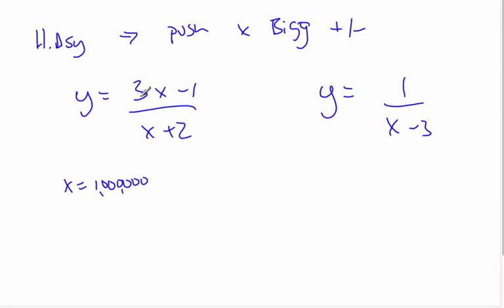Okay, well I would have 3 million minus 1, which is basically 3 million, a little bit shy of 3 million, over a million plus 2. So basically I have 3 million over 1 million, and so all those zeros will cancel, and it would be about 3 because I have a minus and a plus.